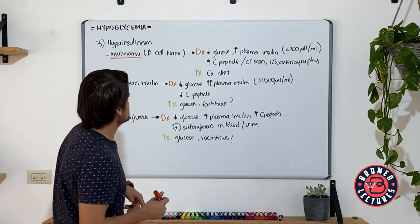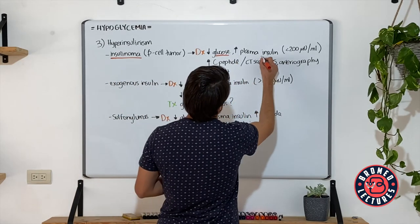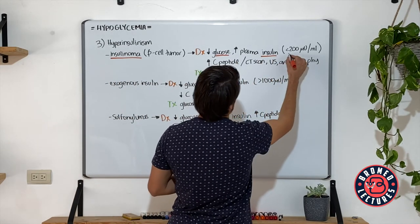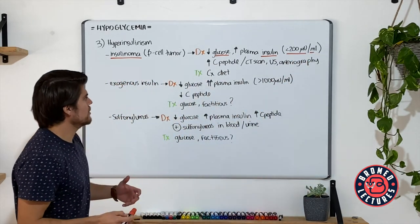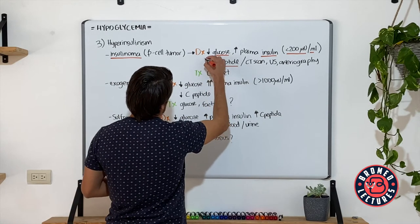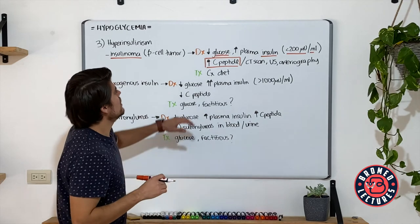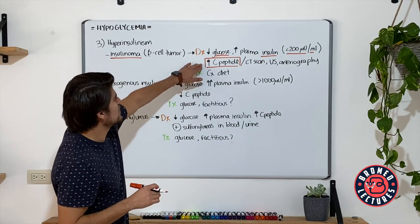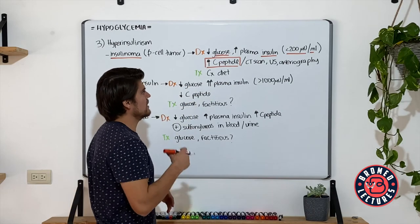For the diagnosis, of course, your hypoglycemia, increased plasmatic insulin with levels not reaching more than 200 microunits. Of course, an increase of the C-peptide. Remember that this is an endogenous etiology. So the pancreatic tumor is generating this C-peptide also as it is generating insulin.